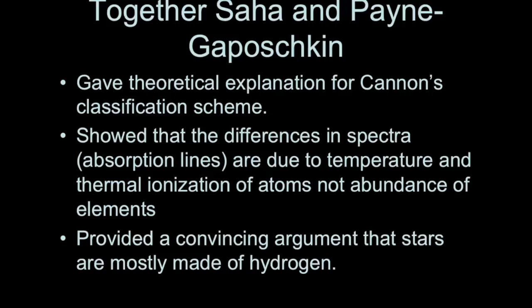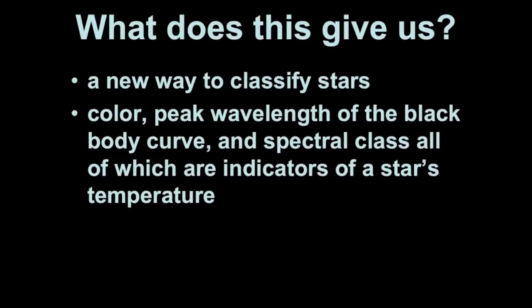So what do we get from all of this? We get a theoretical explanation for the classification scheme, and we get evidence that temperature differences in stars give you the different strengths in the absorption lines, and we also get research that tells us about what elements are in the stars. We also get a good classification system that will come in handy a little bit later. And we get a second way to determine the temperature of stars.